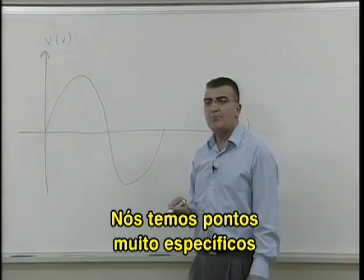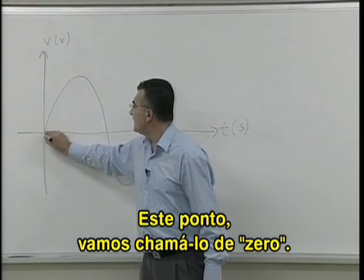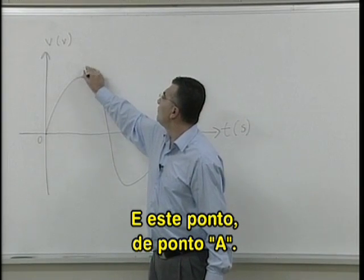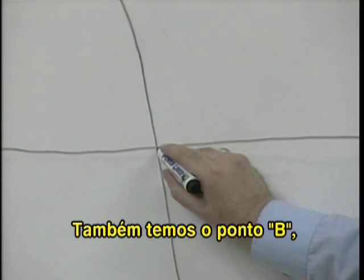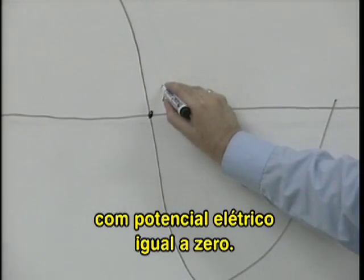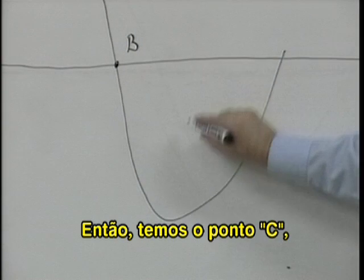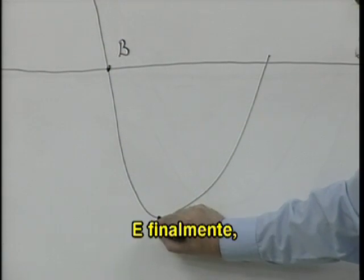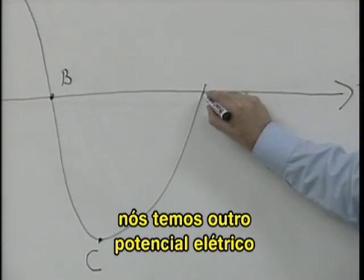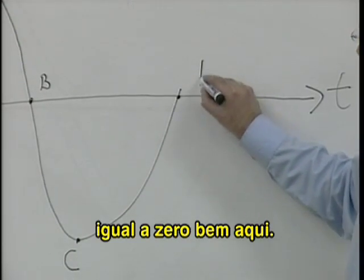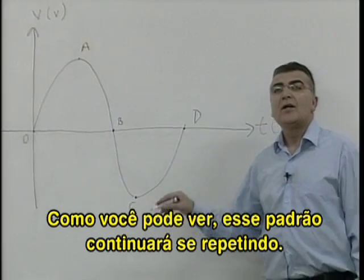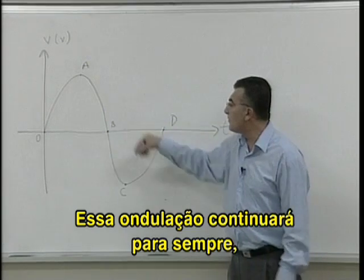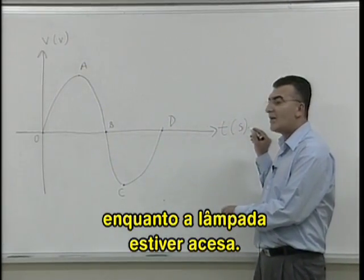We have very particular points on this graph. We have this point — let's call it zero — and this point, point A. Then we have point B, which is at zero voltage. And then we have point C, which is another maximum voltage but on the negative side. And then we have another zero voltage over here. As you can see, this signal will continue on — this form will repeat forever as the light is on.